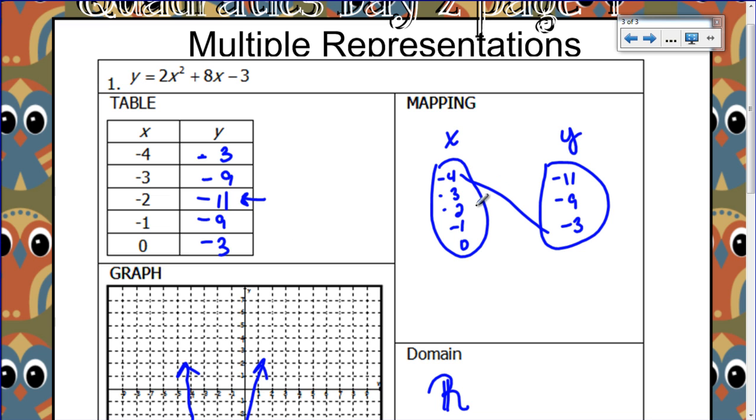Let's draw arrows. The negative 4 goes with negative 3. The negative 3 with negative 9. The negative 2 with negative 11. The negative 1 with negative 9. And the 0 with negative 3. I can see where they all go and how they all match. Those are our multiple representations.